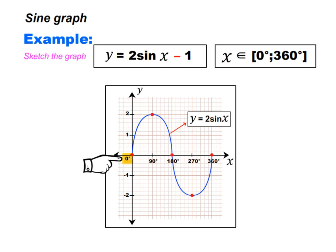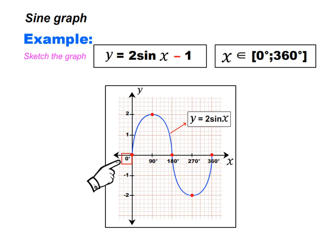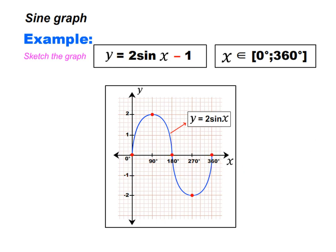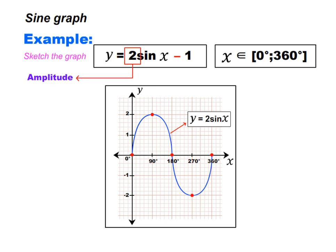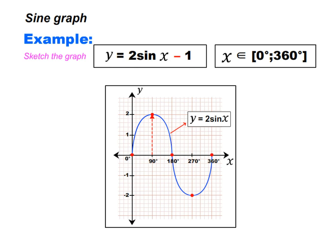The graph cuts the x-axis at 0 degrees, at 180 degrees, and at 360 degrees. We call these the x-intercepts of the graph. Look at the equation y is equal to 2 sin x minus 1. This tool is called amplitude — it will affect the height of the graph. The amplitude is the distance from the x-axis to the peak, which is 2 units, because next to sin x we have a 2.